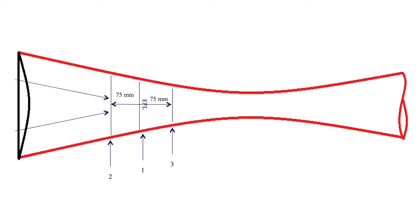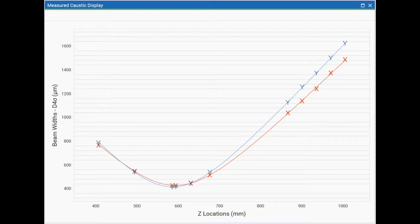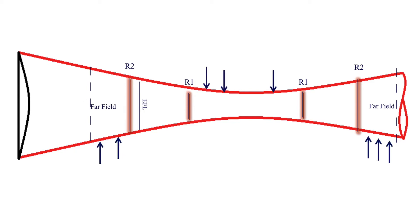This new Beam Squared feature identifies these locations by first finding the beam waist and Rayleigh range. It then calculates proper measurement locations along the beam's propagation or caustic. Here is a representation of the X and Y beam widths versus the distance from the focusing lens. Beam width measurements are taken at one Rayleigh length about the waist, then more are taken past the second Rayleigh length in the far field.